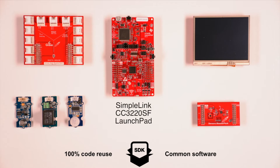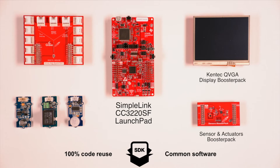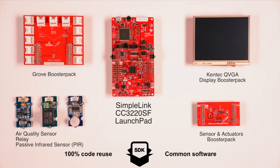The other components are the sensors booster pack with a variety of sensors providing temperature, humidity, pressure, and motion and ambient light sensing, the Kentek QVGA display booster pack adding a resistive touch screen color display, the grove-based booster pack which connects the passive infrared and air quality sensors, and a relay to demonstrate external HVAC control.